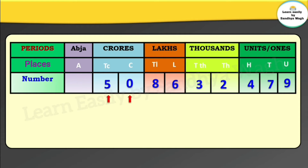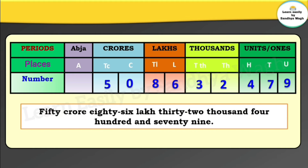In the crore period we have 5 and 0, so we read 50 crore. In the lakhs period we have 8 and 6, so 86 lakhs. In the thousands period we have 3 and 2, so 32 thousand. In the units period we have 479. So the number reads: 50 crore 86 lakh 32 thousand 479.